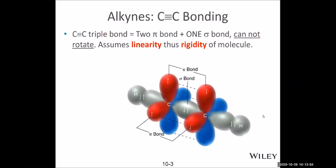The alkyne has a carbon-carbon triple bond, so it has two pi bonds and one sigma bond. It cannot rotate because to rotate you would need to break the two pi bonds, and that's very difficult. Because each carbon has two electron groups, both carbons are sp hybridized and the molecule is linear. In line structures, this part needs to maintain a straight line.